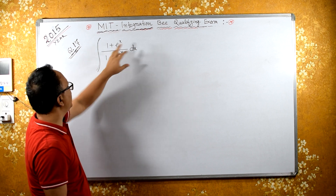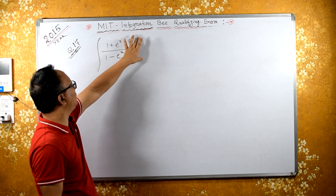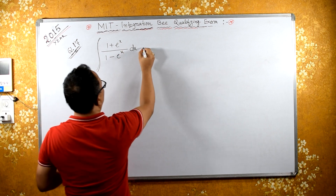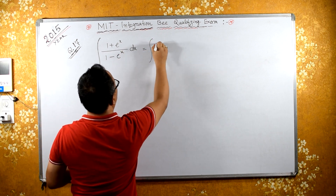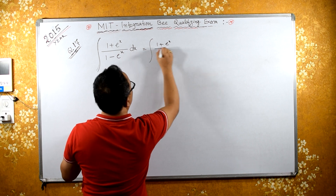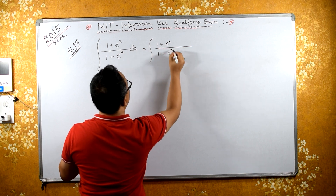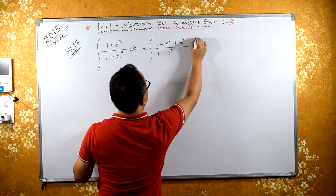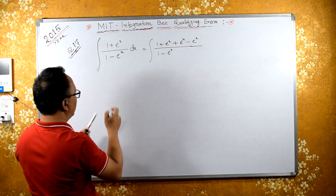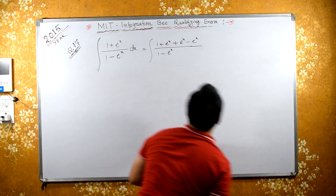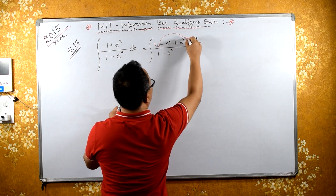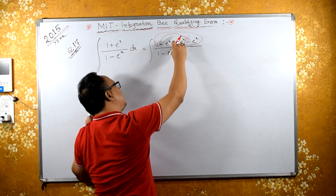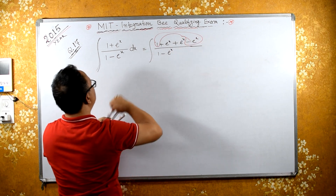Now, if I rationalize 1 plus eˣ up and down, it will be more complicated. So instead, I will adjust: here we have 1 plus eˣ over 1 minus eˣ. If I add eˣ minus eˣ in the numerator — why? Because if I do this, I can get 1 minus eˣ in the numerator, and then eˣ plus eˣ minus eˣ terms cancel. So this is the same expression.